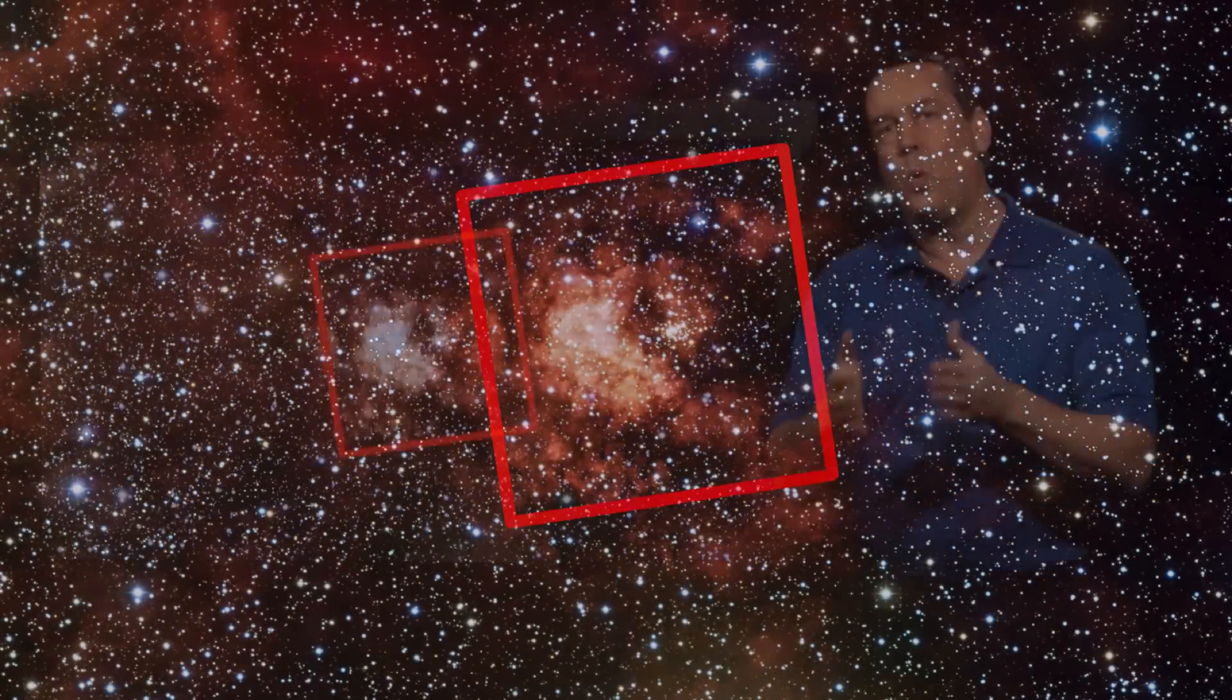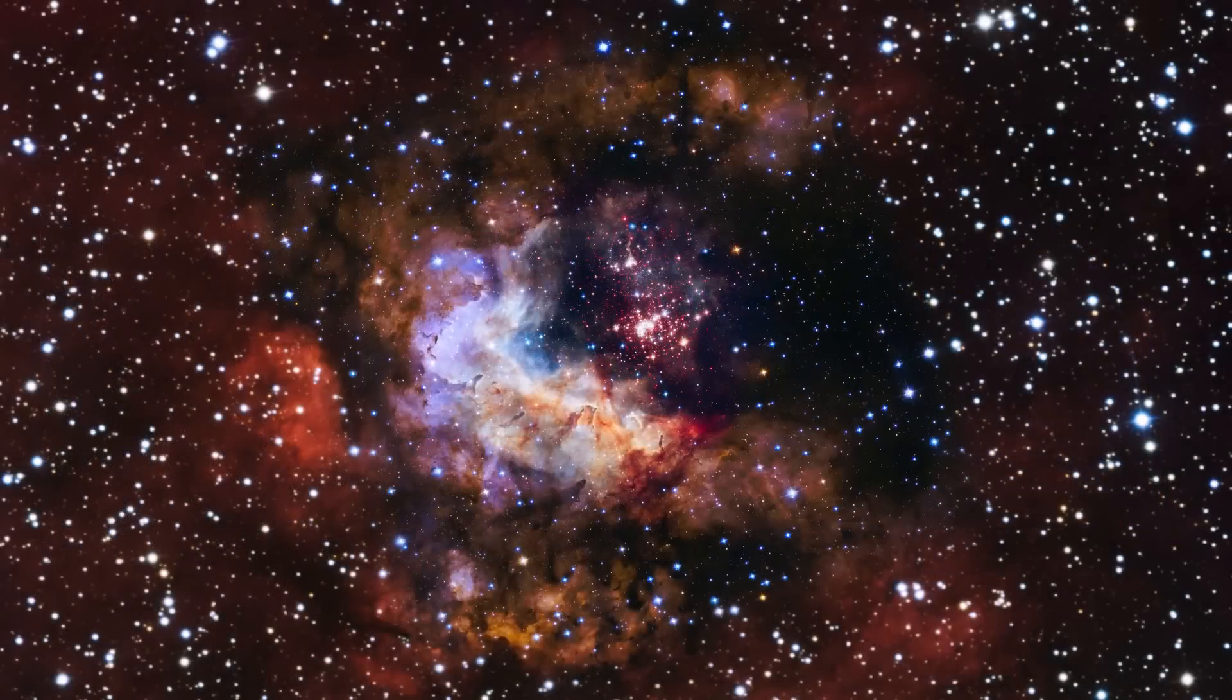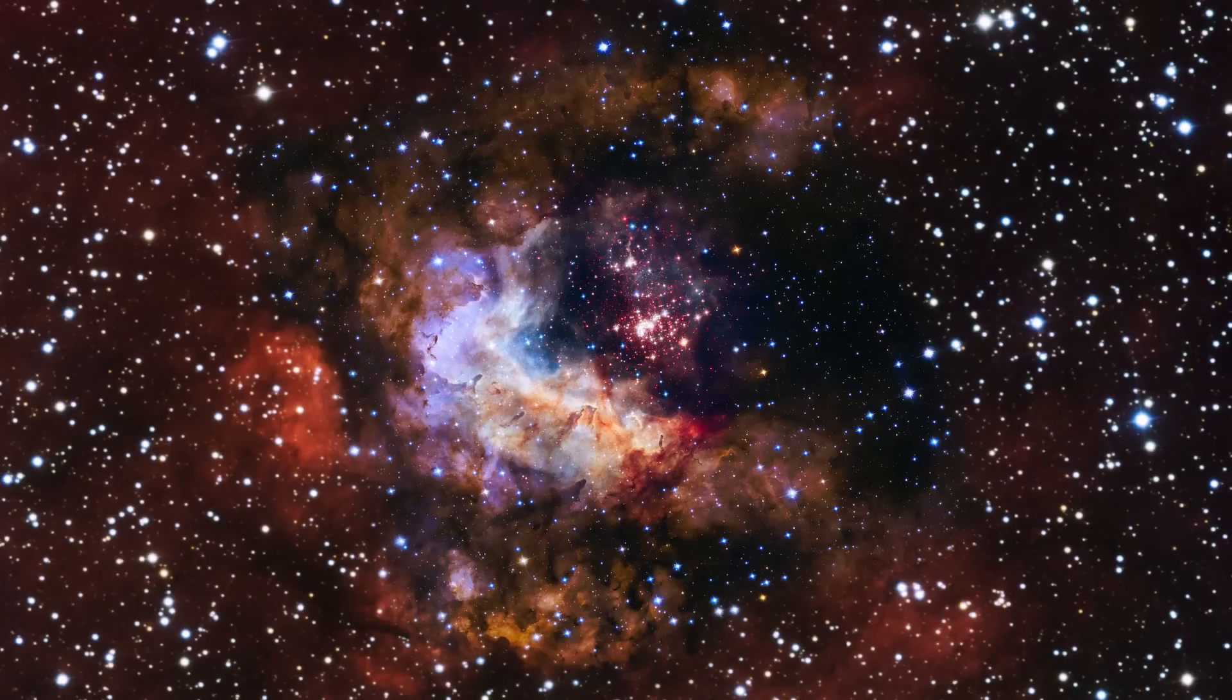When we do a visualization, we want a widescreen aspect ratio. So we cropped it down to the widescreen aspect ratio, blended the Hubble image and the background image together. This was our starting point for our visualization. Now, we want to take a look at that nebula, but you've got all these stars in the way. So the first thing we do is get rid of all the stars.